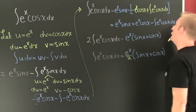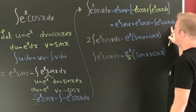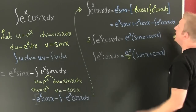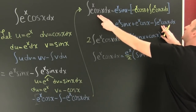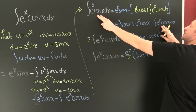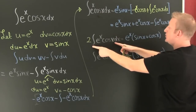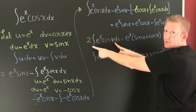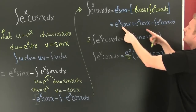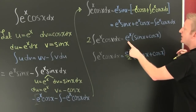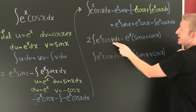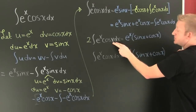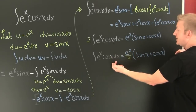I see that I have the integral of e to the x cosine x dx on both sides. So I'm going to add it to both sides, getting me two of them over here. I also factored out e to the x, so now I have e to the x times this quantity. I'm trying to find that integral, so I divide both sides by two. And there we go.